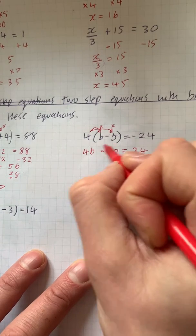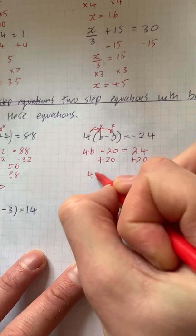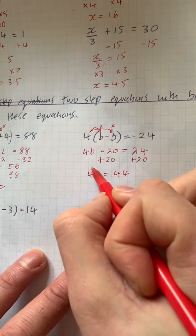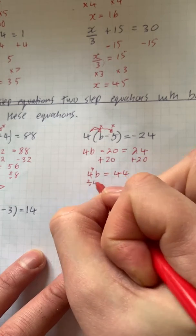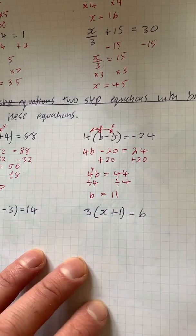Now the opposite of taking away 20 is adding 20. So we've got 4b is equal to 44. Now this means 4 times b, so the opposite of times by 4 is dividing by 4. So we know that b is equal to 11.